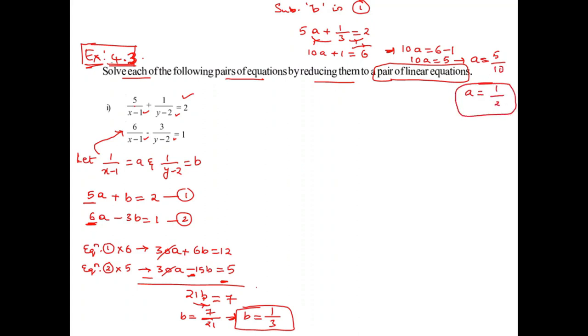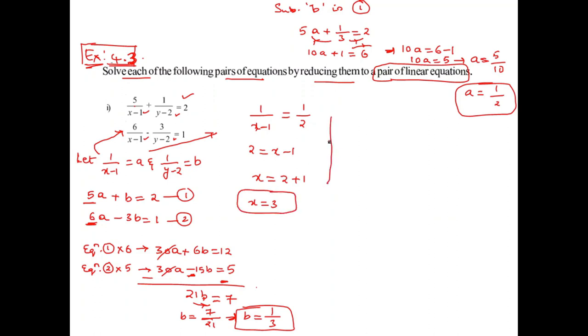Now substituting the values of A and B to get X and Y. We have 1 by x minus 1 equals A equals 1 by 2. Cross-multiplying, x minus 1 equals 2, and shifting 1 to the other side gives x equals 3.